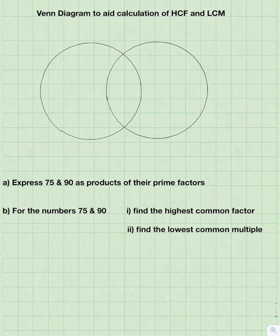And then the second part of the question: for the numbers 75 and 90, find the highest common factor and find the lowest common multiple.